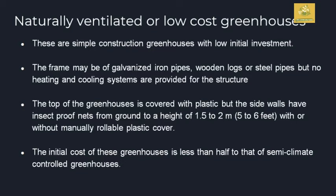The third type is low-cost greenhouses, also called naturally ventilated greenhouses. These are simple-construction greenhouses with low initial investment. The frame is of galvanized pipes and there is no heating or cooling system provided in the structure. The top of the greenhouse can be covered with plastics, the sidewalls with insect nets from ground level up to a height of 1.5 to 2 meters, with manually rollable plastic cover used in these greenhouses. The initial cost of these greenhouses is less than half that of semi-controlled greenhouses.